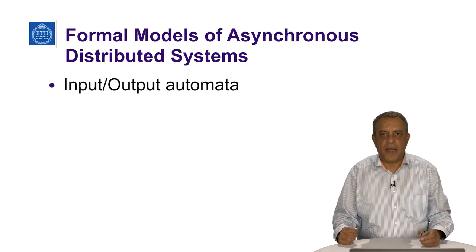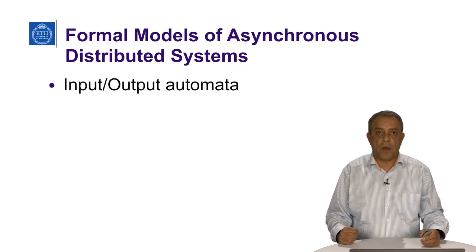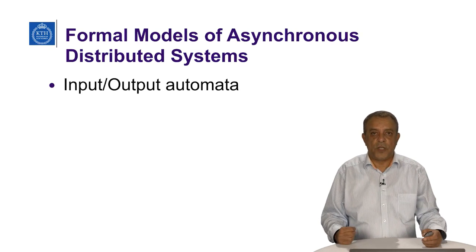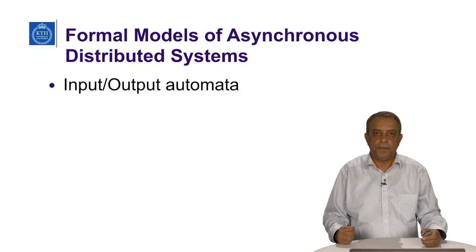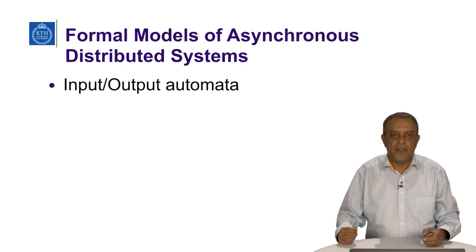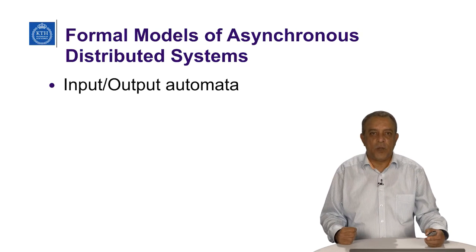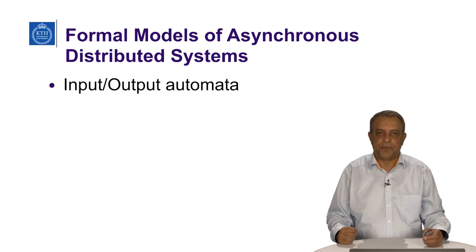We will define what an Input-Output Automaton is, what an execution of an Input-Output Automaton is — we call it an I/O automaton — and what is an external behavior of an automaton, normally called a trace or a history.